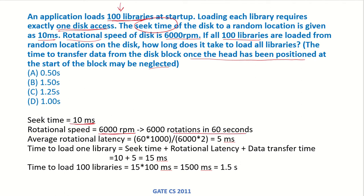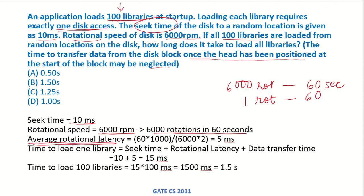6000 rotations per minute means 6000 rotations in 60 seconds, so 6000 divided by 60 gives 100 rotations per second. The average rotational latency is the time required for half a rotation. So 1 full rotation takes 60/6000 seconds, meaning half a rotation takes 60/6000 multiplied by one half.